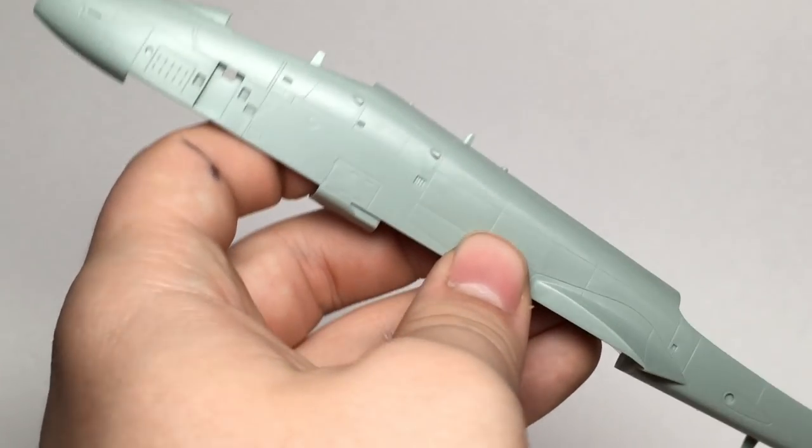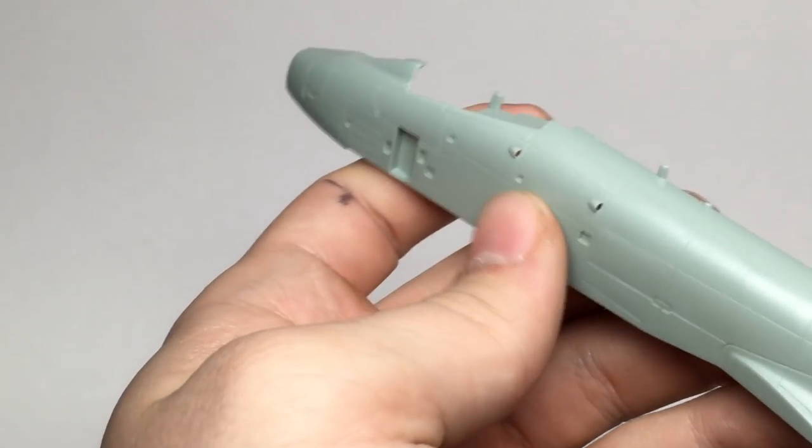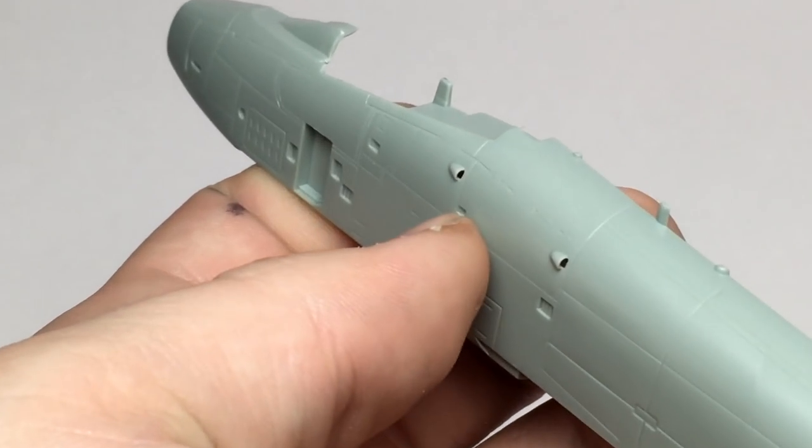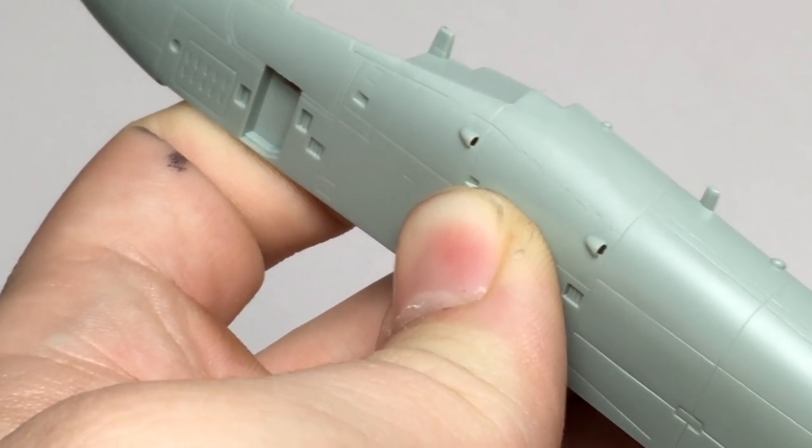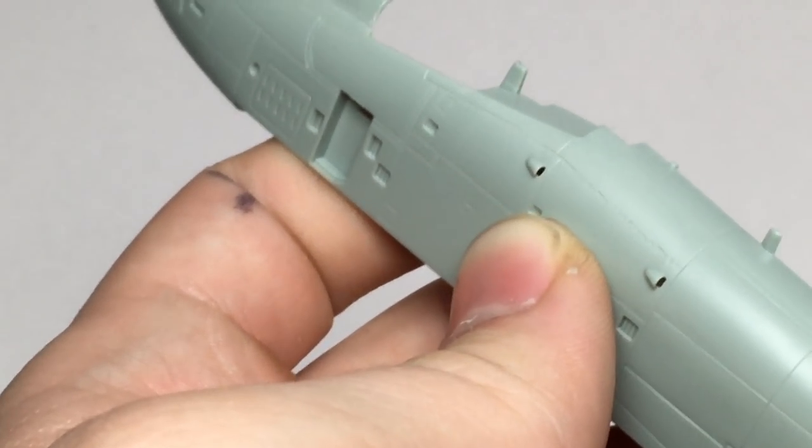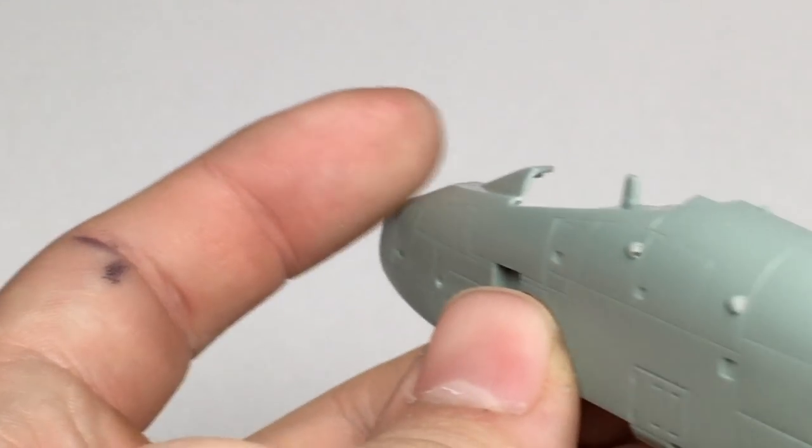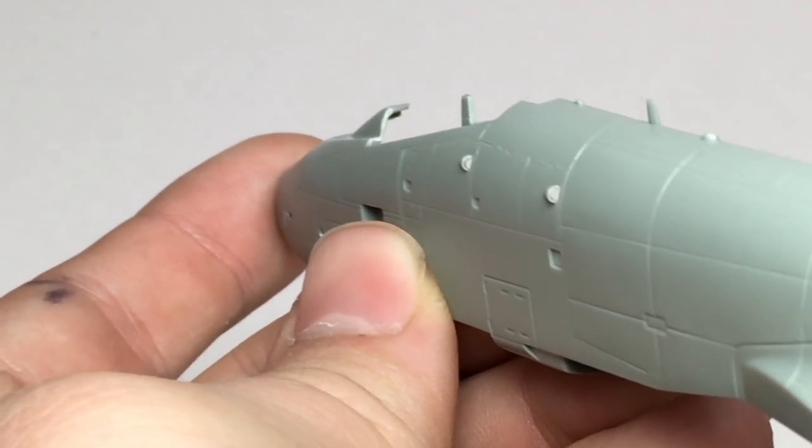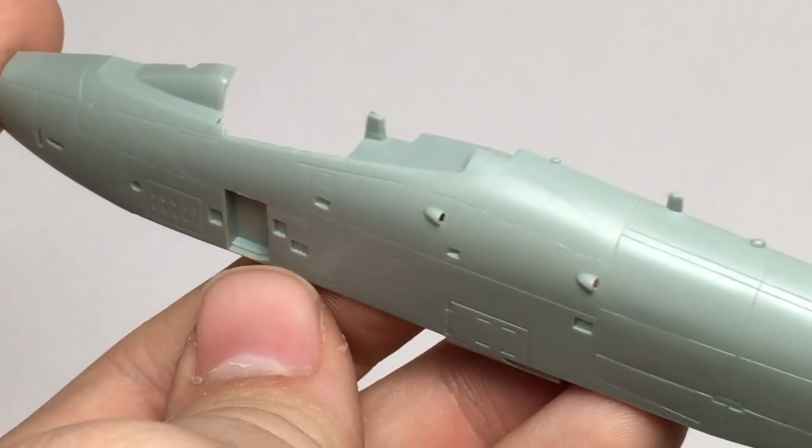One final comment on the fuselage halves. I have no idea how Academy did this, but this is a fantastic touch. These little, I honestly don't even know what they are, they're not intakes, they're facing the wrong direction to be intakes, so some kind of exhaust port are actually molded straight through. I don't know how the molds were cut to do this, but it's an amazing touch and that adds a lot of realism to the model.